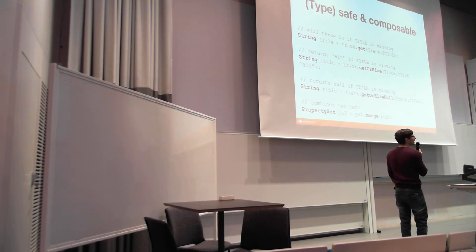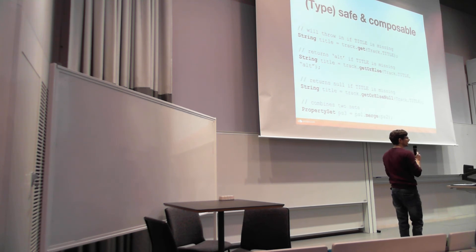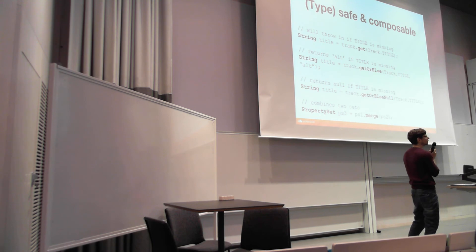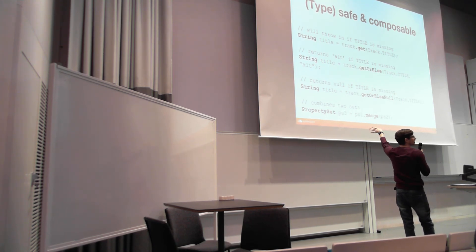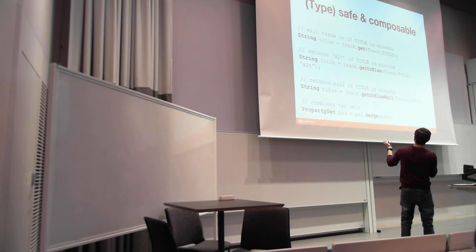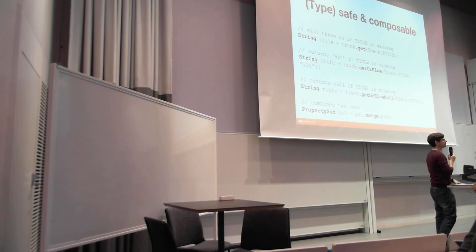It has a couple other desirable properties. We can make it safer to obtain data — by default if we get something out of a set it will throw if it doesn't exist, because we want to fail fast if data is missing that you think should be there. But similar to the Optional type in Java, we have something like getOrElse where you can provide a fallback if the property is missing from the set. It's also compositional — I can take many of these sets, merge them together, and if I get something from the API and something from local storage I can combine them and serve exactly the data set I want to my UI.